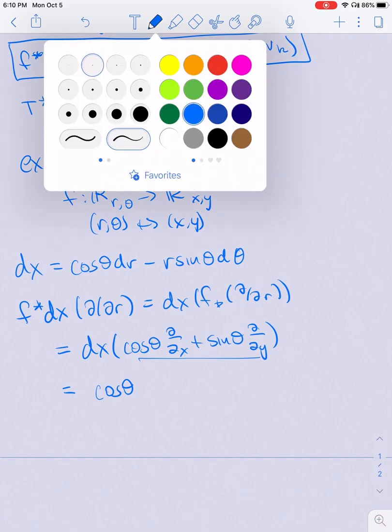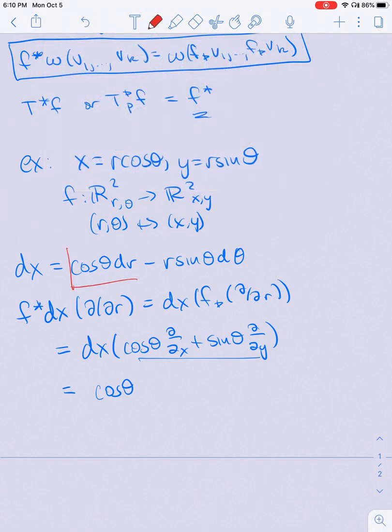f push forward of d by dr is just the first column of the Jacobian matrix of f. That'll be cosine theta d by dx plus sine theta d by dy. And then dx, when I eat this vector, is just going to give me cosine theta. So this tells me that the coefficient in front of dr in dx is cosine theta, which is exactly what I wanted.